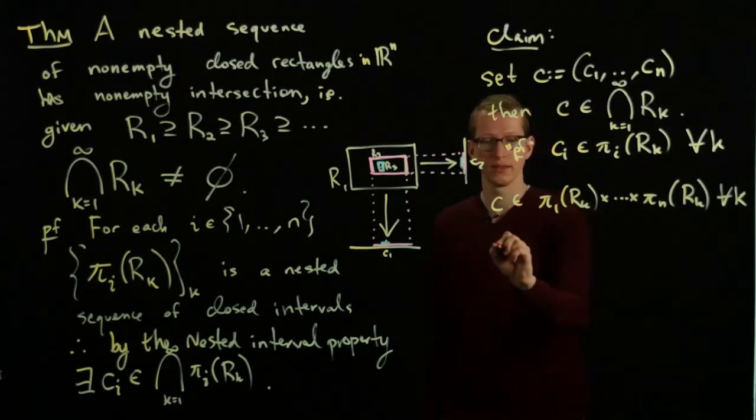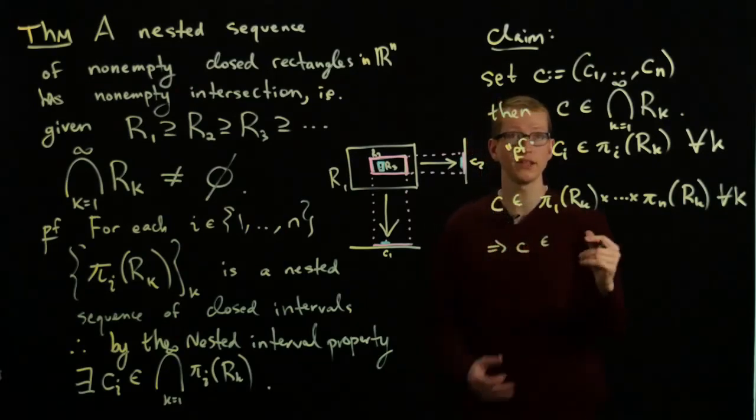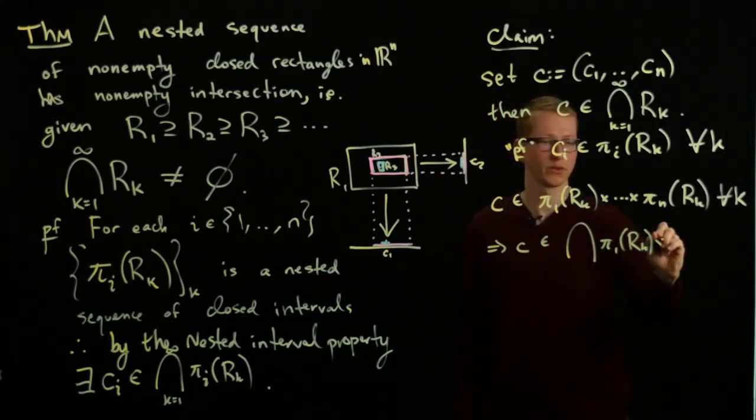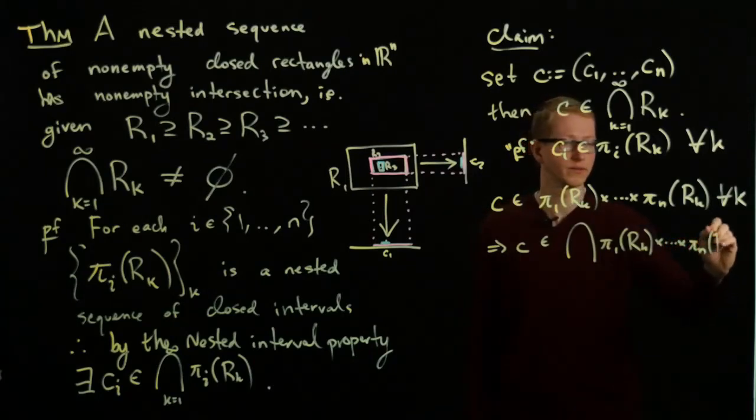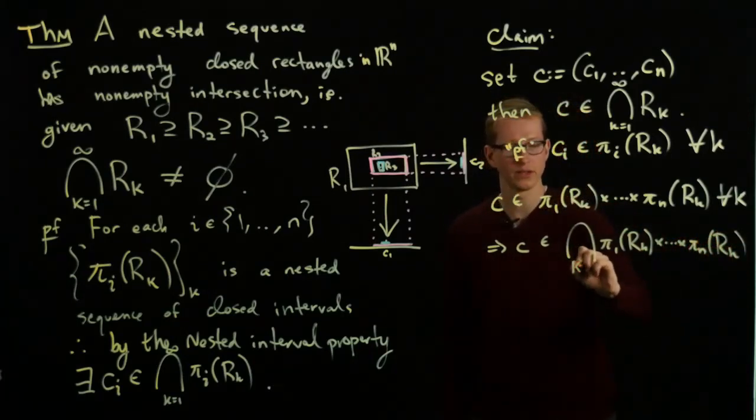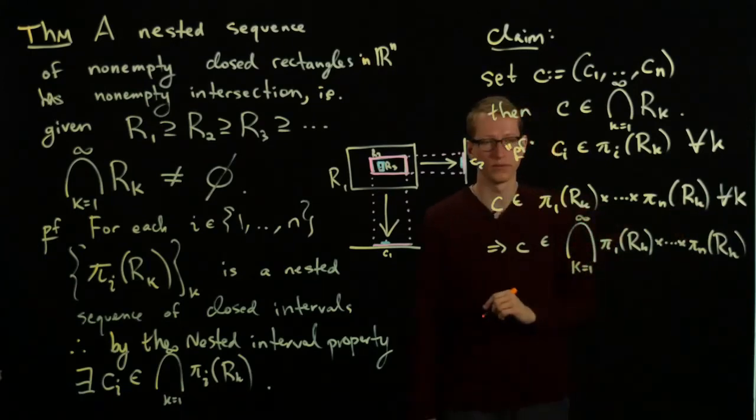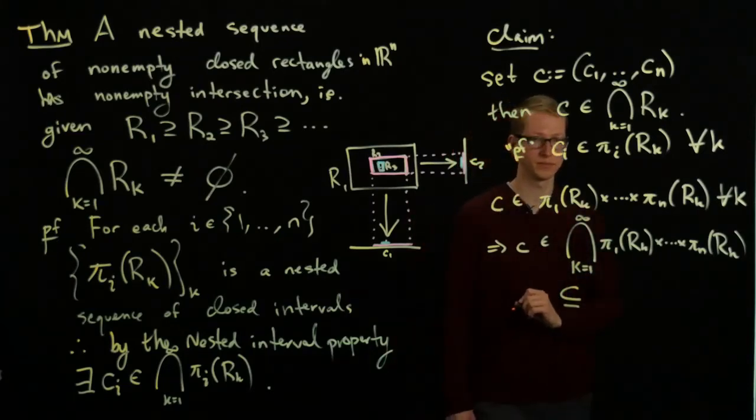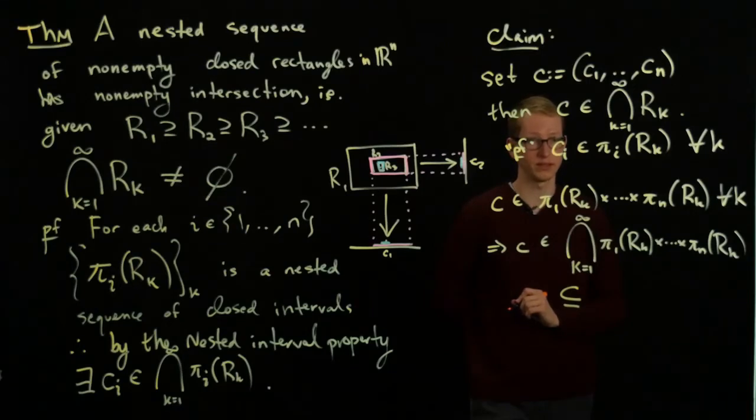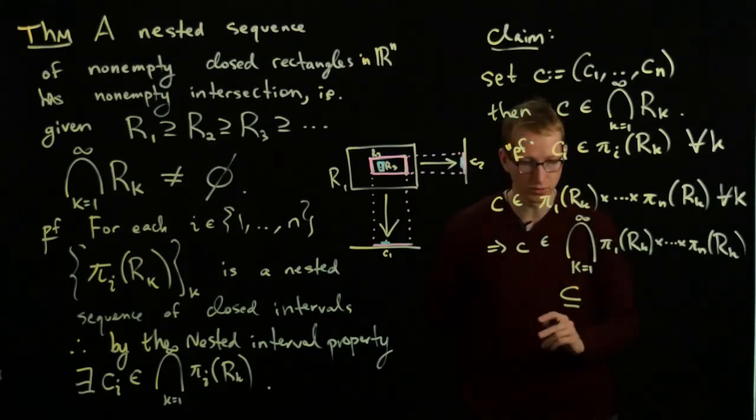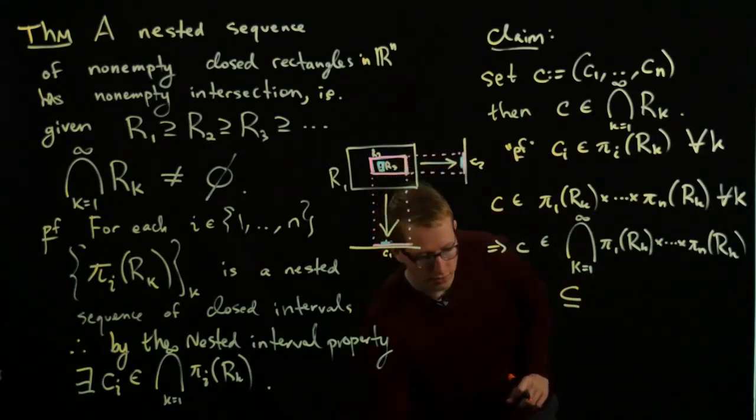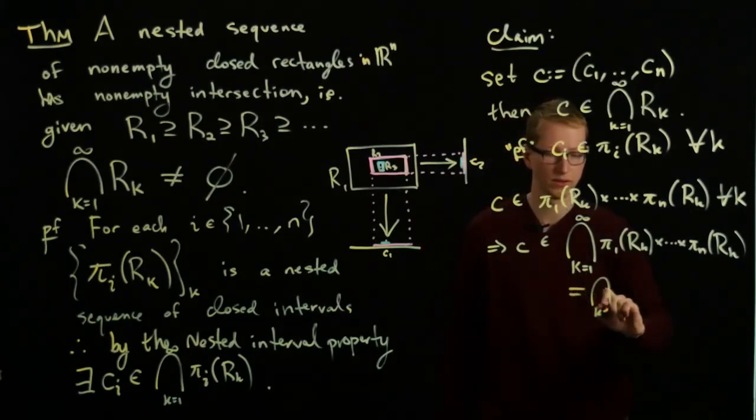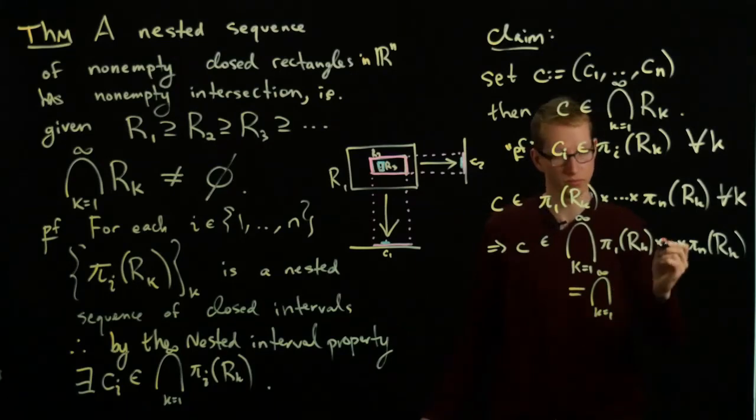Because this is true for all k, this implies that c is in the intersection of all of these: ∩k[π1(Rk) × ... × πn(Rk)]. Now we have the intersection over all k. This precisely equals the actual product, which equals the intersection of the Rk's.